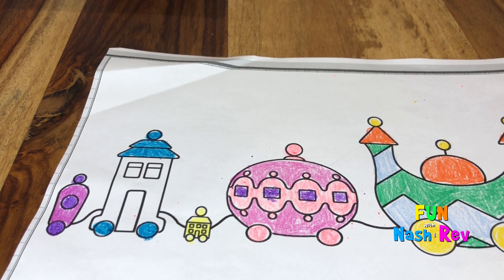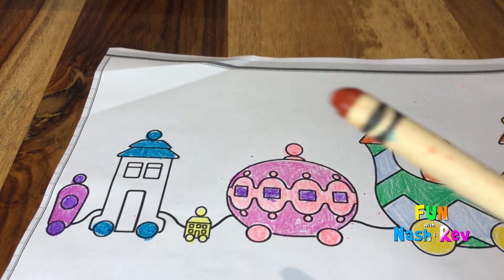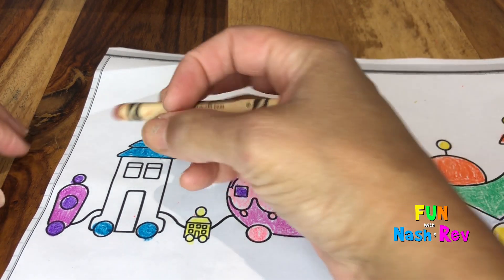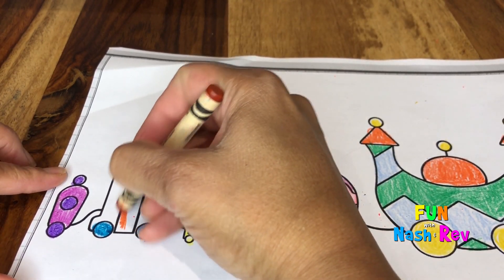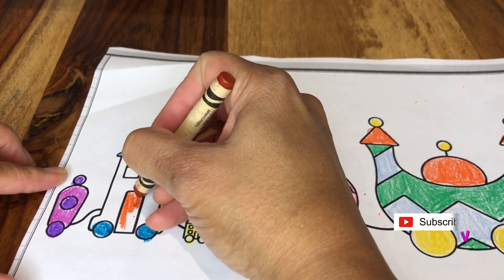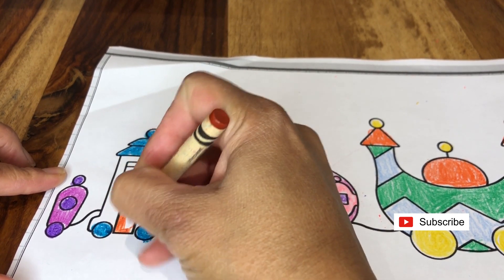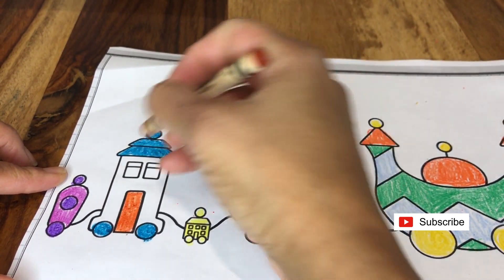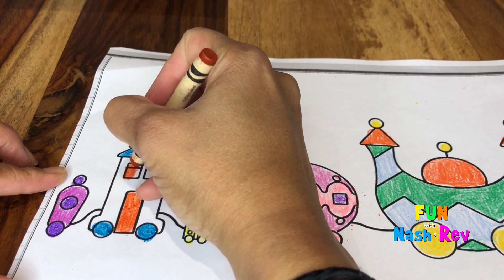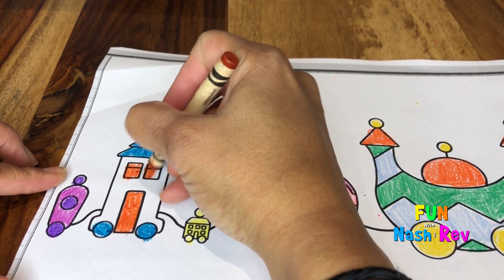This is an interesting color, it's called bittersweet. Let's color the door. It's like a dark orange. It kind of looks like the color of a pumpkin, doesn't it?